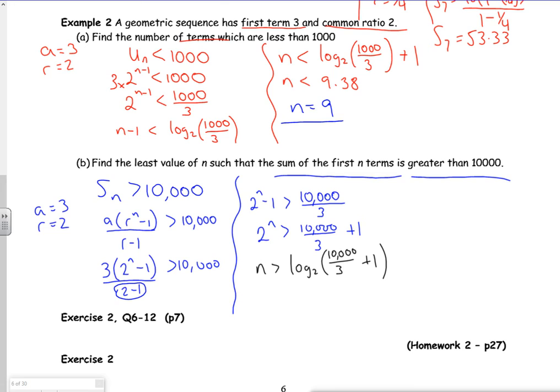Right. So let's get back to finding it in my calculator again. So it's F4 for math, F2 for log a b. I put a 2 in the base. And then I've got, being really careful, 10,000 over 3. Yep. Add 1. So that gives me 11.7.